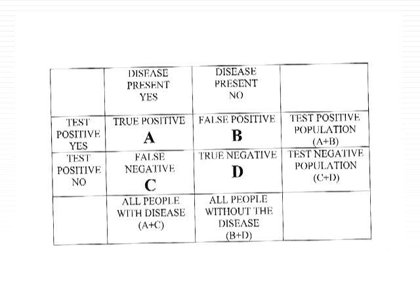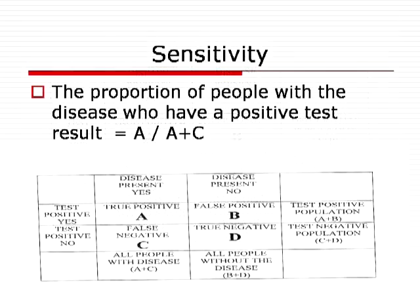And bottom right of the table is D, which is a true negative, where the disease isn't present and the test says the disease is not present. So the sensitivity is the proportion of people with the disease who have a positive test result. That is equal to the true positives divided by the true positives plus the false negatives — so the sensitivity is A divided by A plus C.